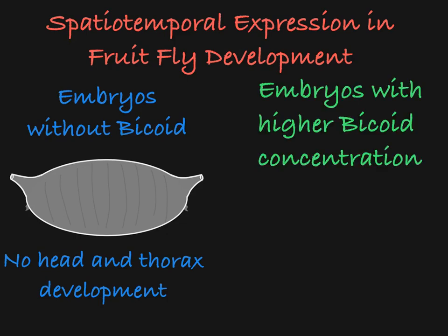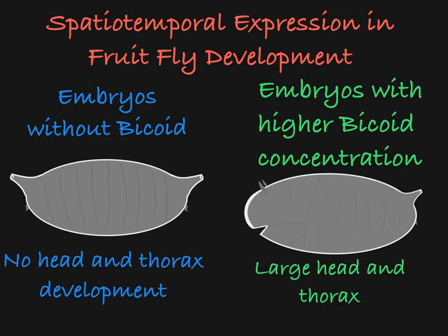Embryos with increased levels of Bicoid protein saw the protein diffuse across a larger area of the embryo, causing the genes necessary for head development to be active in a larger portion of the embryo, leading to the development of a relatively large head and thoracic structure and relatively small posterior structures.